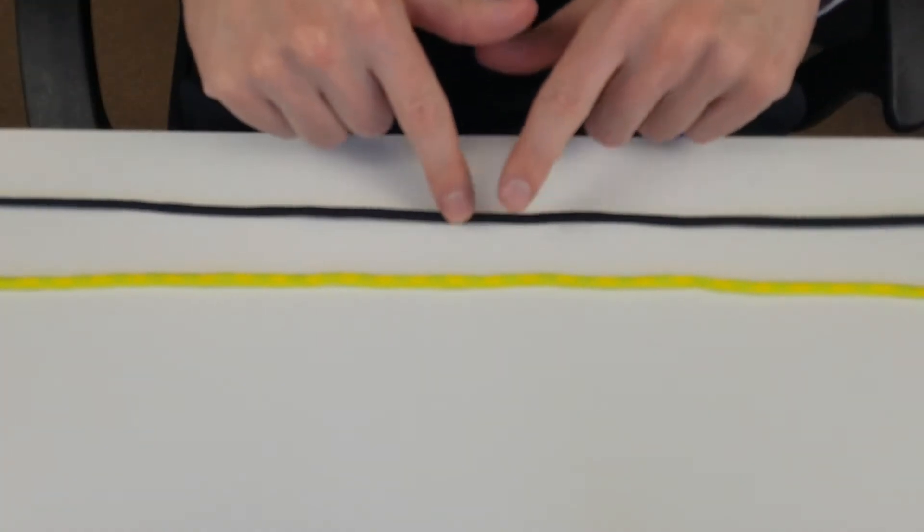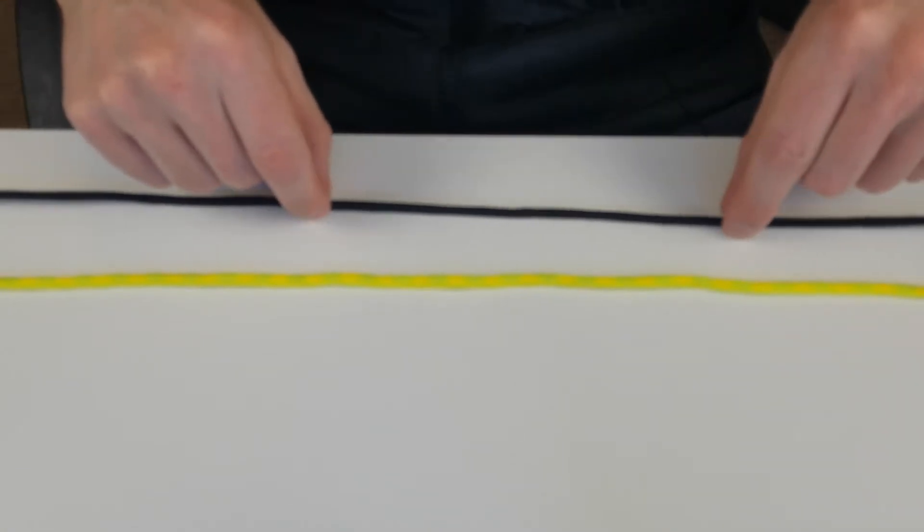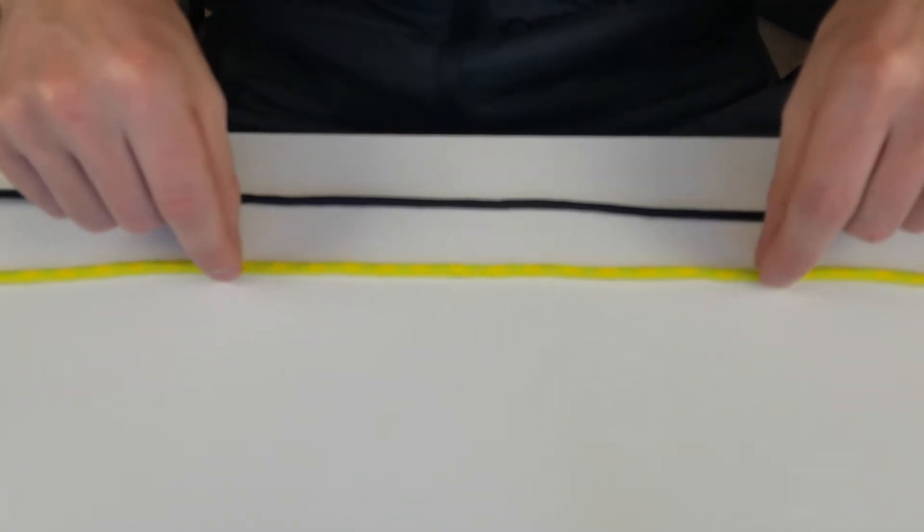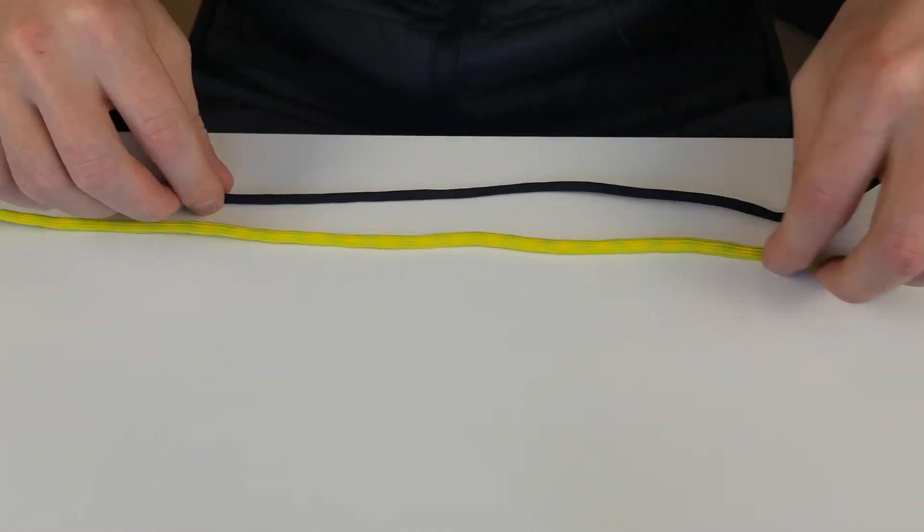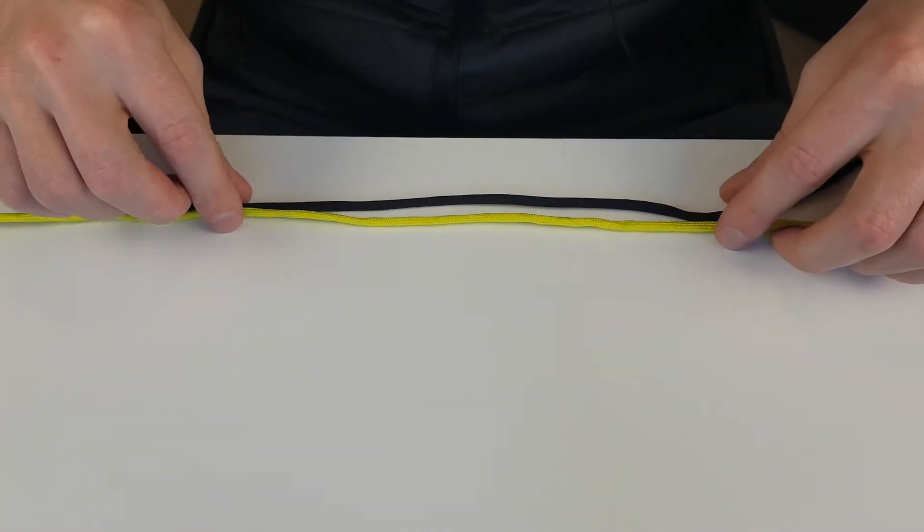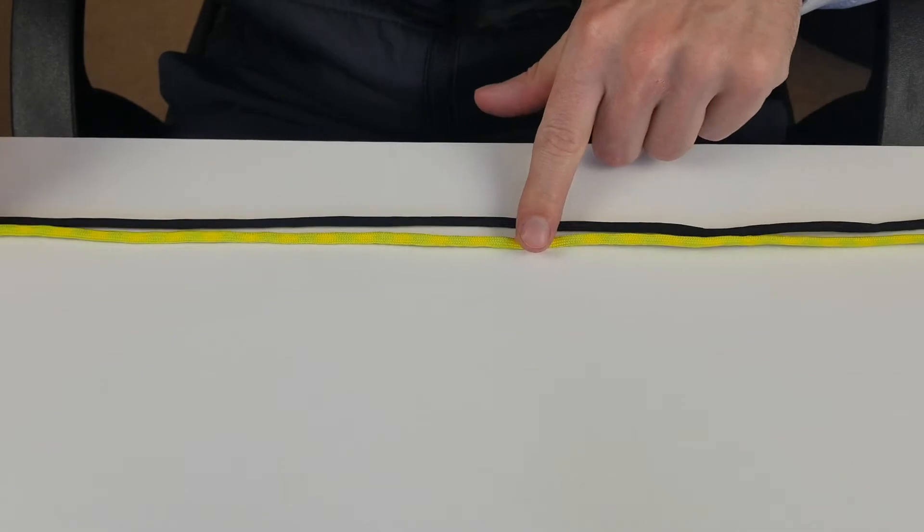You're going to want to lay out your line. In this case the black line is the braid and the yellow line is the mono. What you want to do is overlap them by a decent amount. If it is your first time you want to overlap them by a pretty good amount just because it'll make things a lot easier.